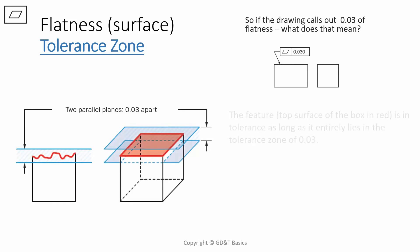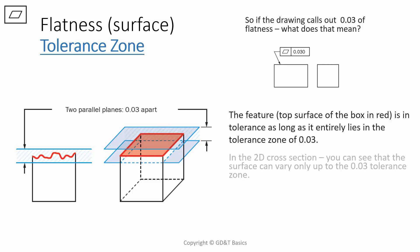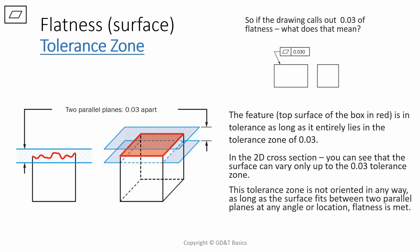Let's discuss the tolerance zone of flatness. If the drawing calls out 30 microns of flatness, what does that actually mean? Well, this means that you have to have your entire surface within two parallel planes that are spaced at the tolerance width apart. The feature here, which is the top surface of the box that's in red, is in tolerance as long as it entirely lies within these two parallel planes. In the 2D cross section, you can see that the surface can vary, but only up to this 0.3 tolerance zone. And it's also important to note that this tolerance zone is not oriented in any way. As long as the surface fits between two parallel planes, at any angle or location, flatness is met.